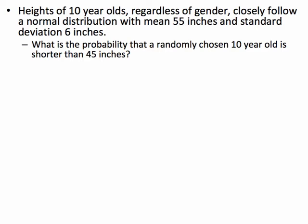Welcome to the help video that goes with this problem. Heights of ten-year-olds, regardless of gender, closely follow a normal distribution with a mean of 55 inches and a standard deviation of 6 inches. What is the probability that a randomly chosen ten-year-old is shorter than 45 inches?